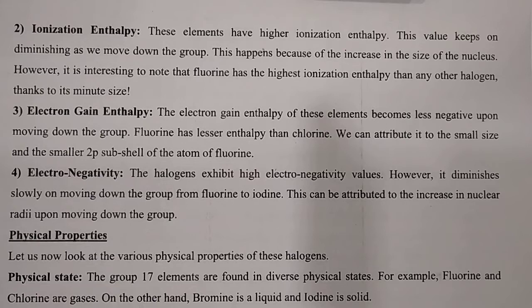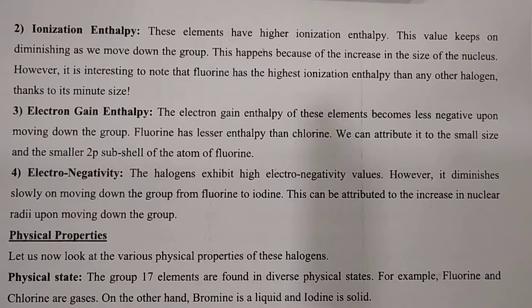Next is electron gain enthalpy — the minimum energy required to gain an electron in the outer shell. The electron gain enthalpy of these elements becomes less negative upon moving down the group, because they are always hungry to gain an electron. Fluorine has lesser enthalpy than chlorine, which can be attributed to its small size and the unavailability of d sub-shell.